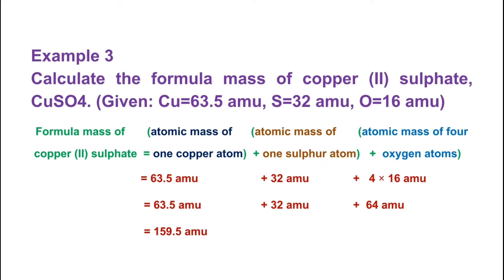The formula is CuSO4. This consists of 1 copper atom plus 1 sulfur atom plus 4 oxygen atoms. Atomic mass of Cu is 63.5 amu, S is 32 amu, and O is 16 amu, so 4 oxygen atoms = 4 × 16 = 64 amu. Total: 63.5 + 32 + 64 = 159.5 amu.